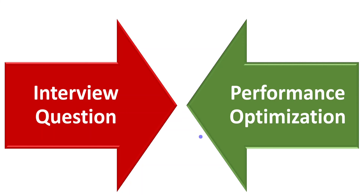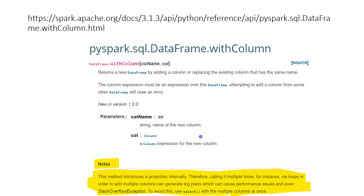Before the next step, let me show the official Spark documentation. From the Spark docs, the withColumn method introduces a projection internally. Therefore, calling it multiple times — for instance, via loops — in order to add multiple columns, can generate big plans which can cause performance issues and even a stack overflow exception. To avoid this, use select with multiple columns at once.